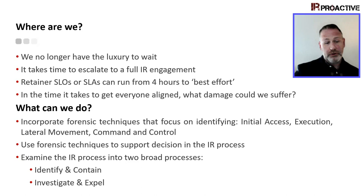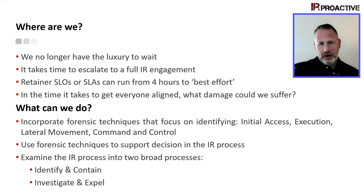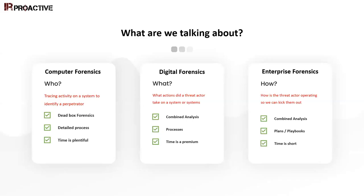Identifying and containing gives us breathing room to do a full investigation and expel the threat actor — handling things like persistence, embedded malware, registry files. But the first priority is identify and contain. There's a real difference in forensics depending on your objectives. Computer forensics — what law enforcement, e-discovery, and private investigators focus on — is dead-box forensics: pull a drive, image it, keyword search, look for files. Time is on your side.